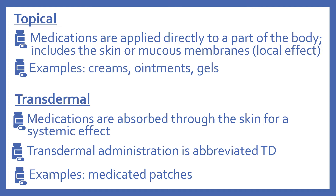Next is the topical route of administration. These medications are applied directly to a part of the body, including the skin or mucous membranes, for a local effect. Examples are creams, ointments, and gels. Then there's the transdermal route, where medications are absorbed through the skin for a systemic effect. Transdermal administration is abbreviated TD, and examples include medicated patches.